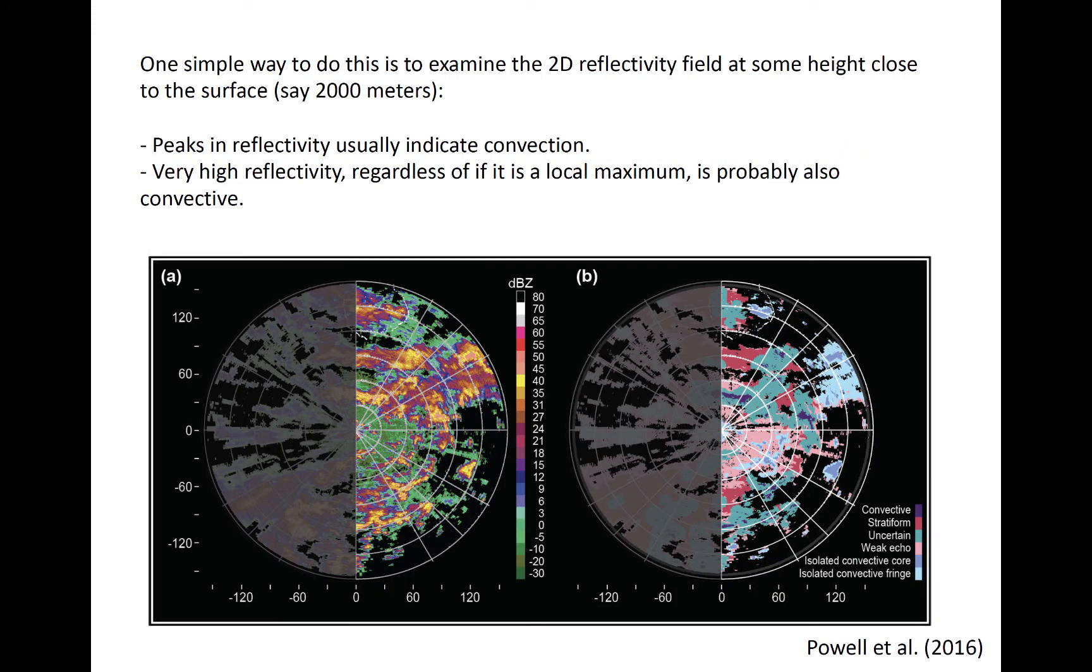One common way to do this is via evaluation of the two-dimensional reflectivity field at some height generally one and a half to two and a half kilometers above the surface. Local peaks in reflectivity, such as these right here, which are often also very high reflectivity, generally indicate convective echo.